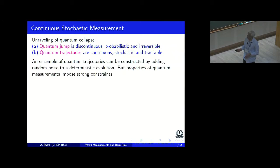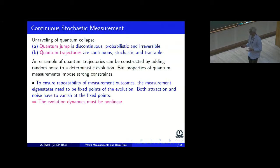This in the literature has also sometimes been called unraveling of quantum collapse. What it does is constructs a set of quantum trajectories interpolating between the initial and final state. And in between, there can be a combination of deterministic evolution and some noise. There are strong constraints on this interpolation. The measurement has to be repeatable, which means the eigenstates have to be fixed points of the evolution, and that makes the evolution necessarily non-linear.